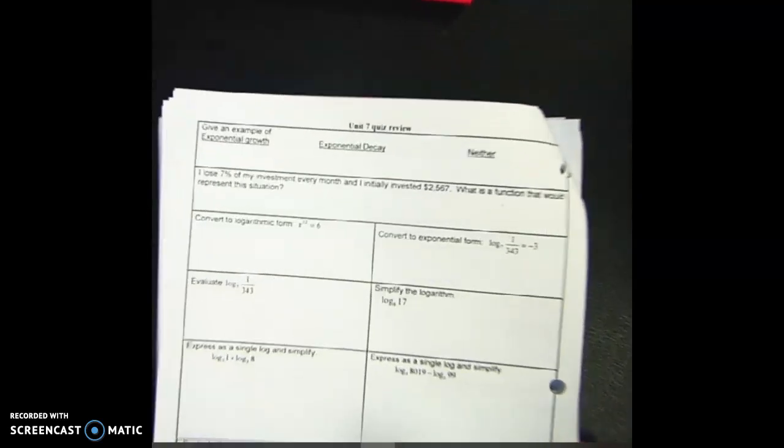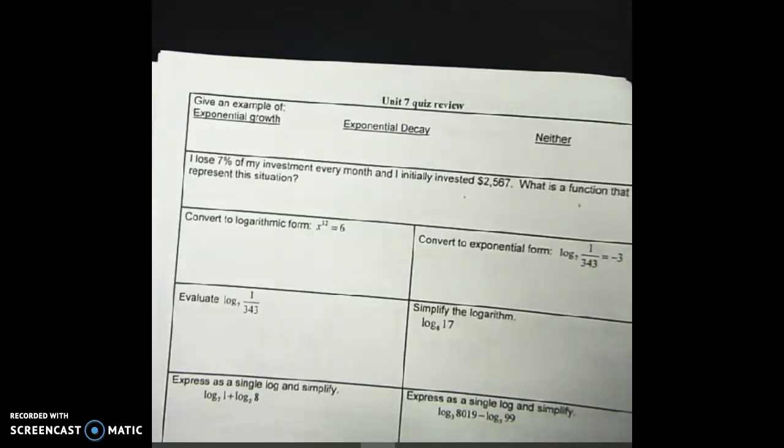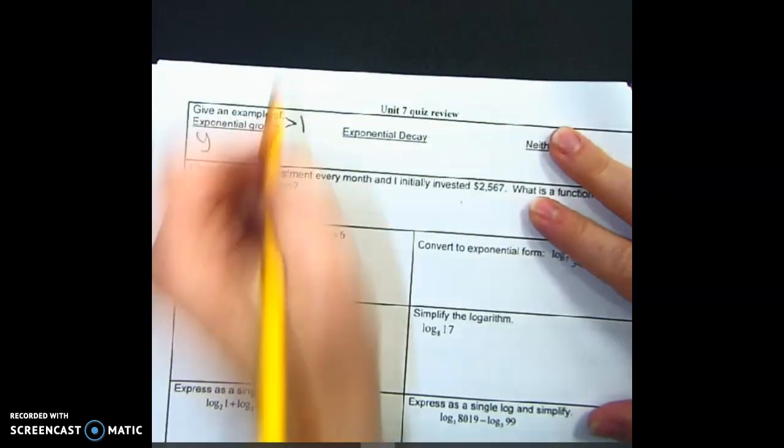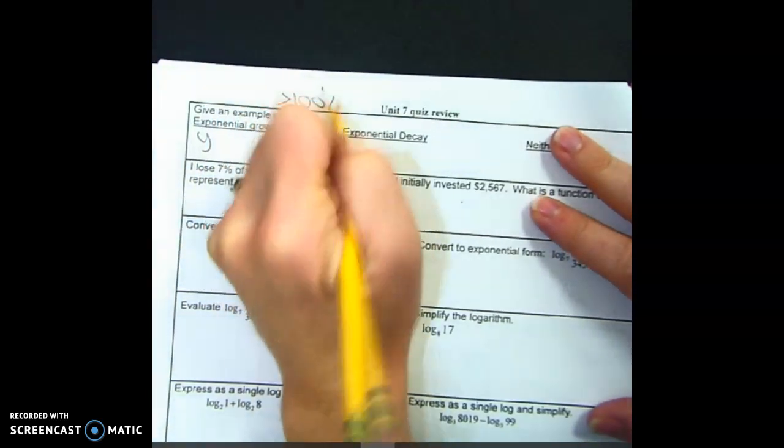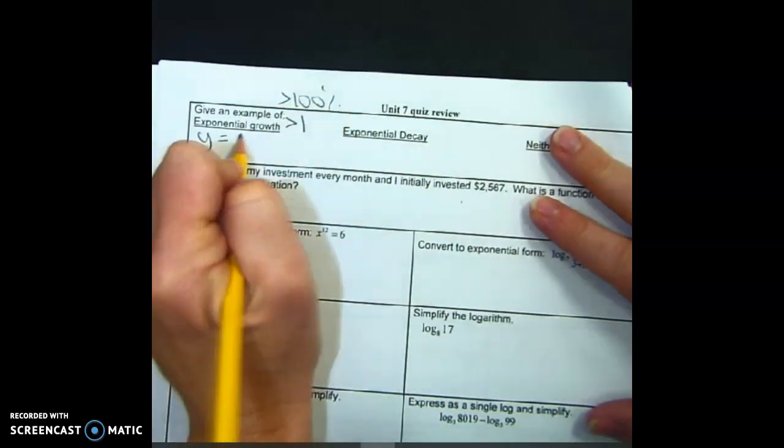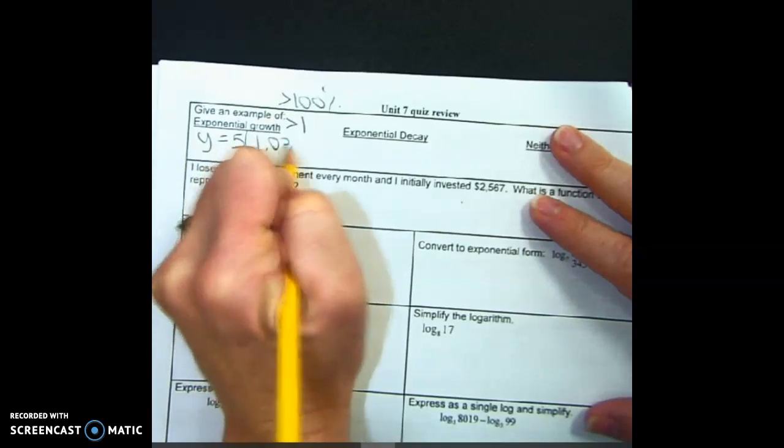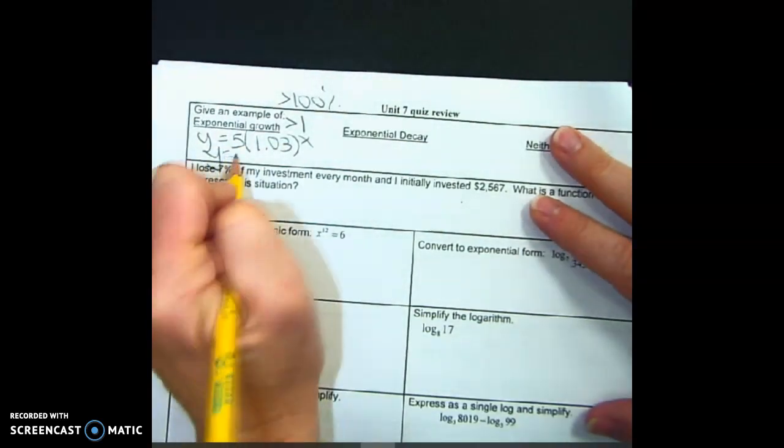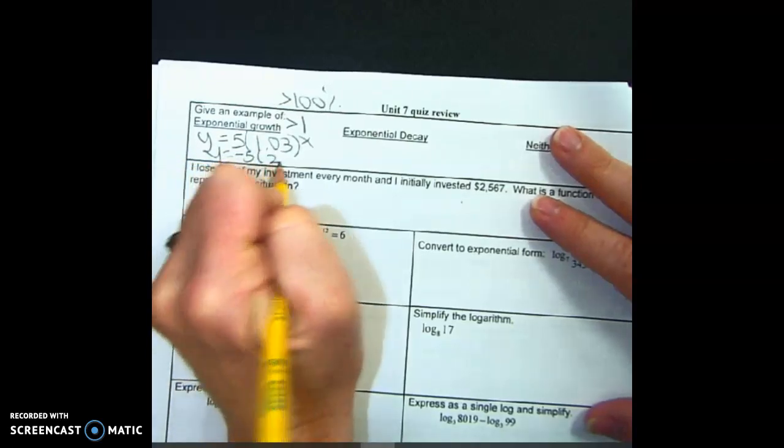Okay, so let's see what the first question is. They want examples of exponential growth, decay, and neither. So growth means it's got to be greater than 1, which means greater than 100%. Okay, so y equals 5, 1.03 to the x. y equals negative 5, 2 to the x.